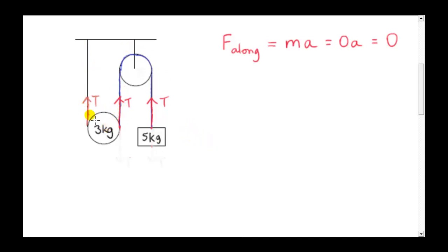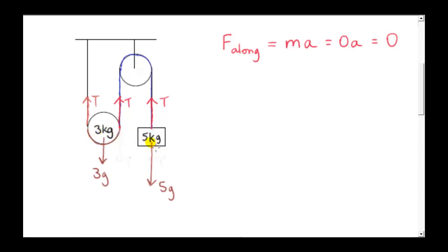These two tension forces act on the part of the string in contact with the pulley, but we can treat that part of the string as part of the pulley itself since its mass is zero. So the two forces act on the three kilogram pulley. The string in contact with the pulley and the pulley itself move with the same acceleration because they remain connected. The other forces are the weights of the pulley and the mass.